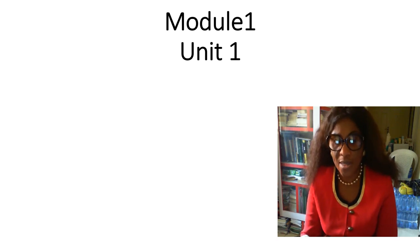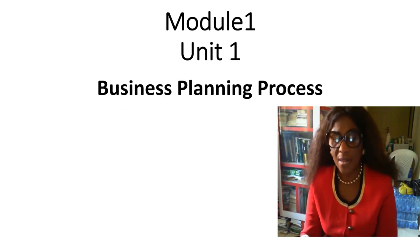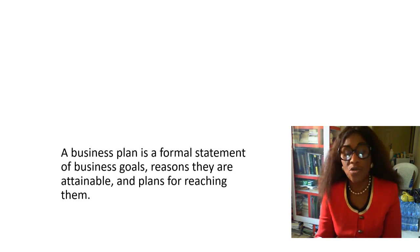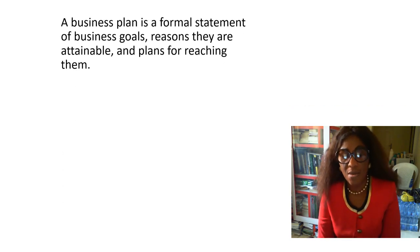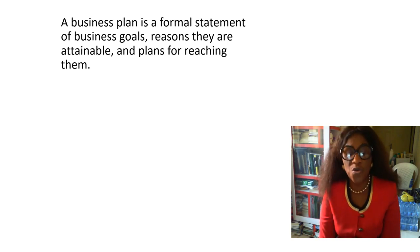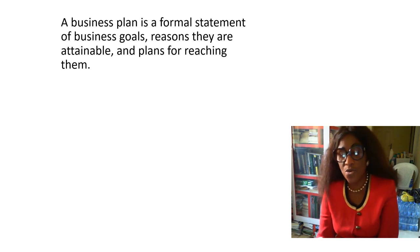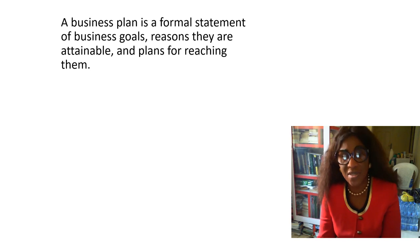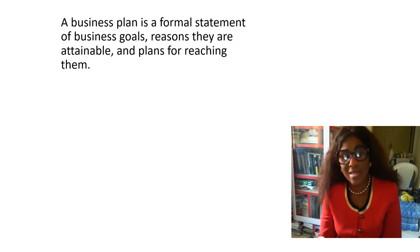We are going to look at Module One, Unit One, which deals with the business planning process. For everything one has to do in life, there has to be a plan for it — whether it is business or even leaving your house to visit friends. For every human activity, there is a plan; it can be a formal plan or an informal plan.